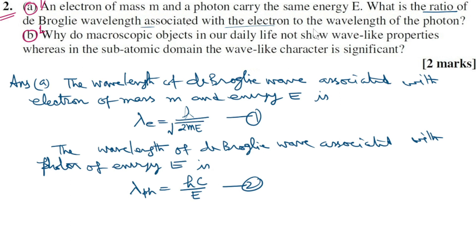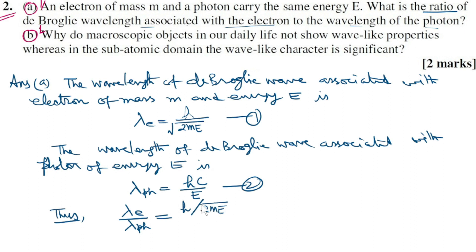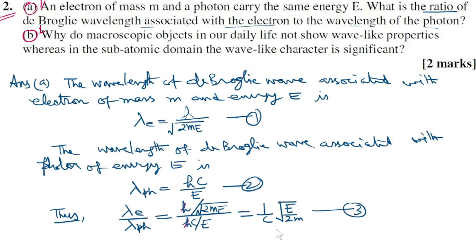According to the question, we find the ratio of the de Broglie wavelength of the electron to that of the photon. Lambda of electron upon lambda of photon equals [h / sqrt(2mE)] divided by [hc/E]. H and h cancel, and after simplification this equals (1/c) times the square root of E over 2m. This is the required answer.